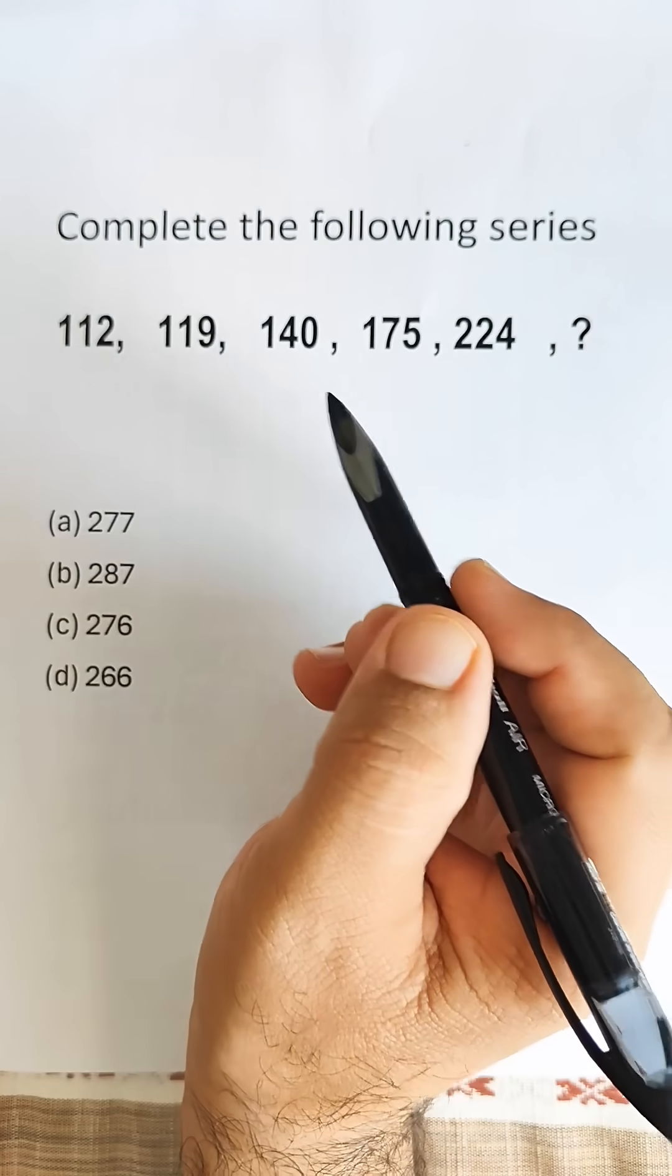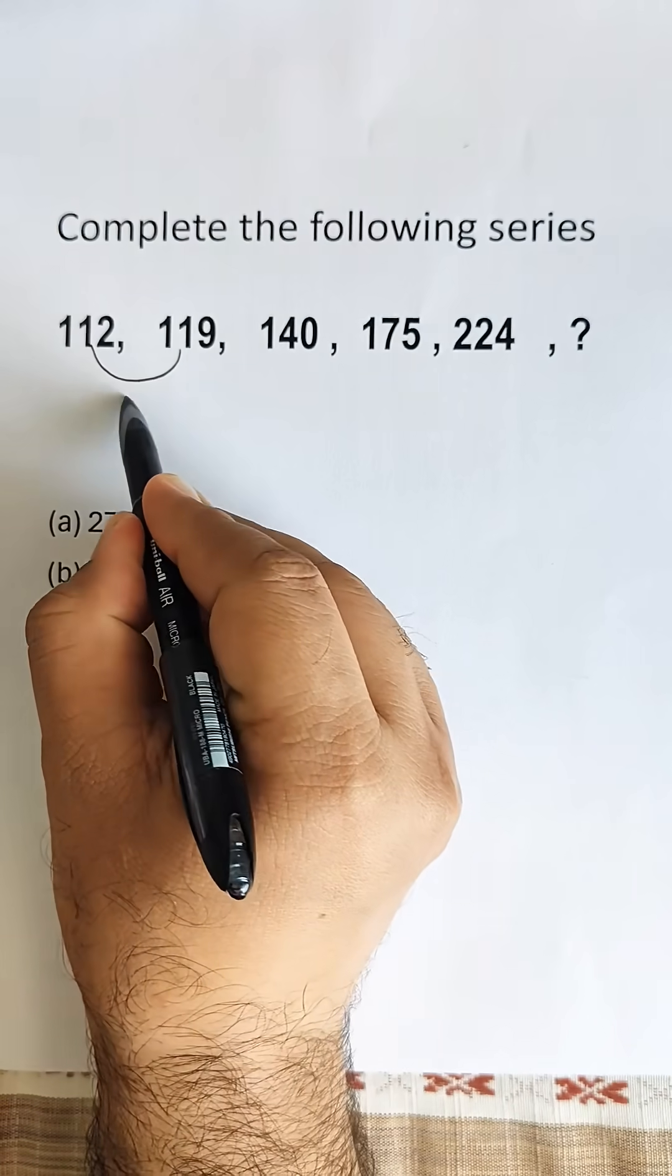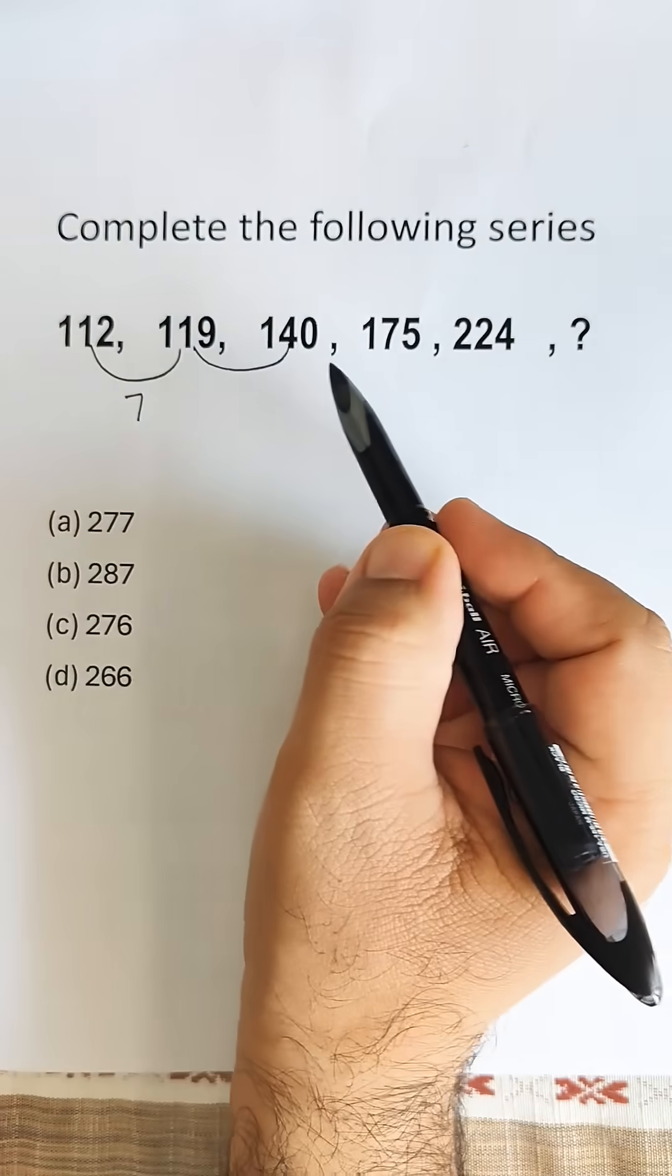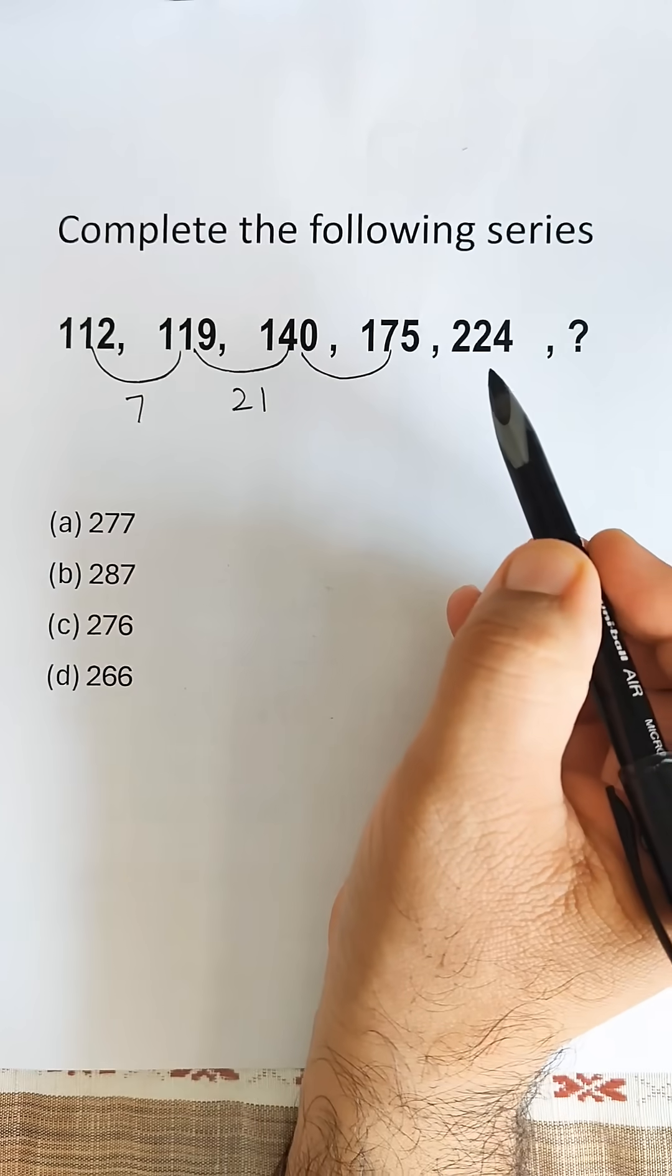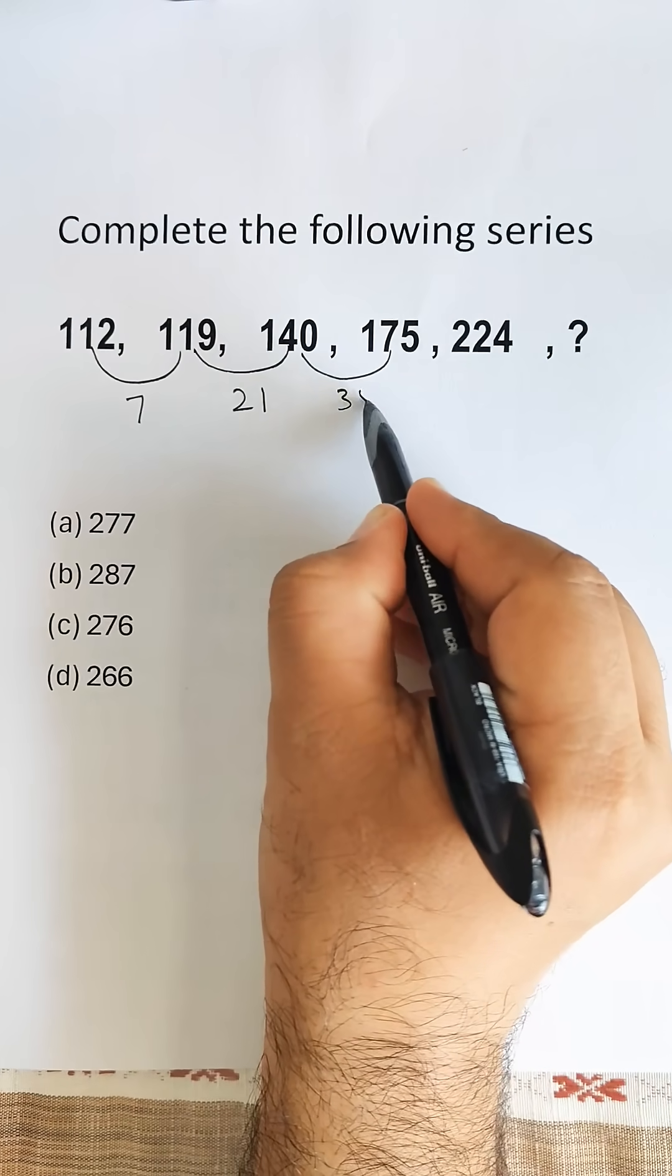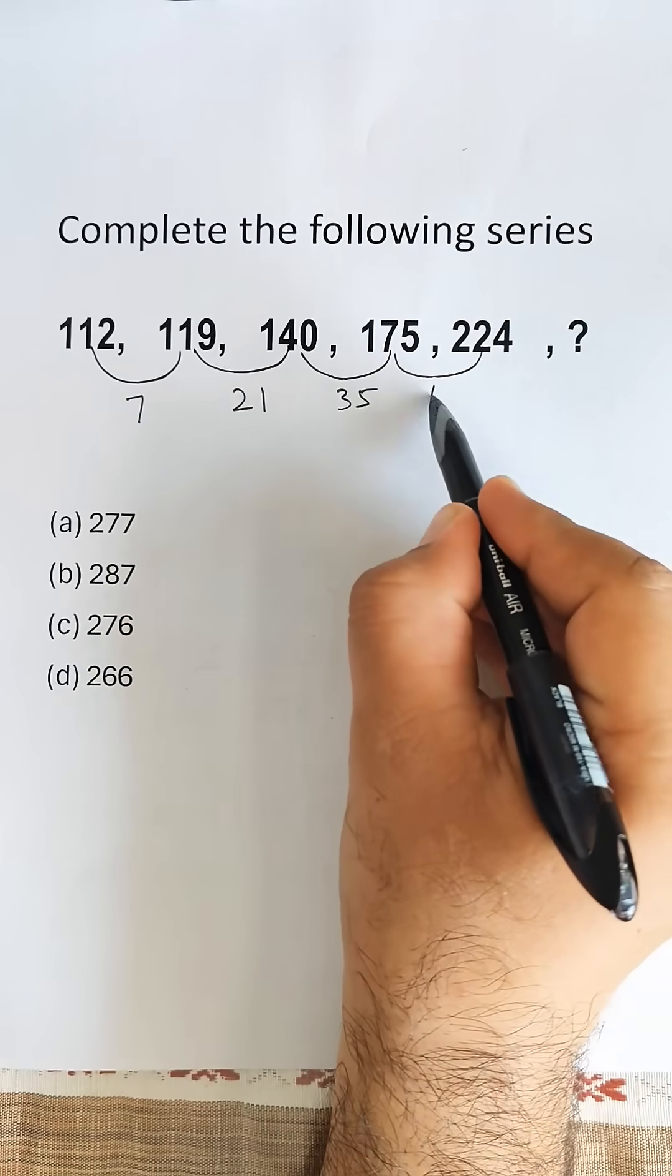If we find the difference between the terms: 119 minus 112 is 7, 140 minus 119 is 21, 175 minus 140 is 35, and 224 minus 175 is 49.